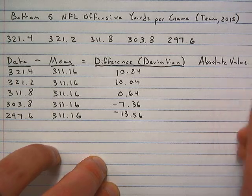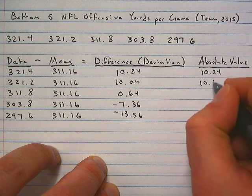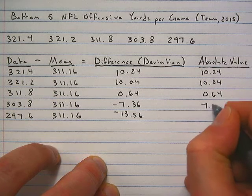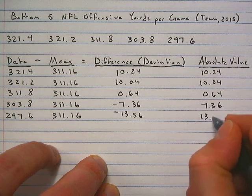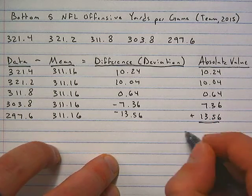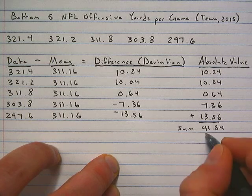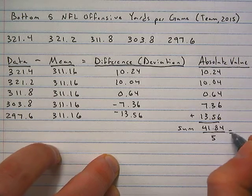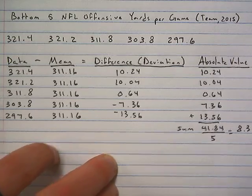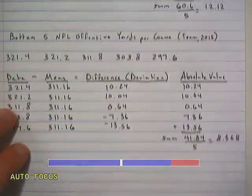Our last column was absolute value — positives stay positive, negatives turn positive. We need the mean of our absolute deviation, so we add this up to get a sum of 41.84, then divide by 5 to get a mean absolute deviation of 8.368.